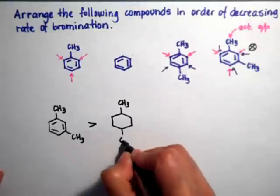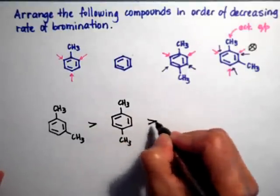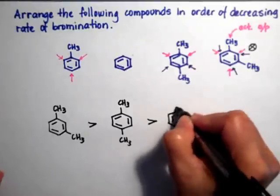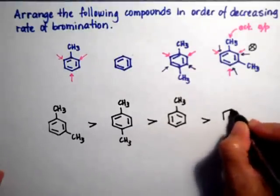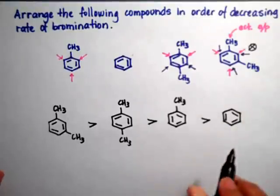The para-xylene is going to be more active than the toluene. And of course, we're going to have benzene at the very end as the least reactive, because it doesn't have any activating groups on it. Done.